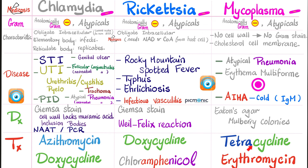How do tetracyclines work? They are protein synthesis inhibitors — they inhibit the 30S ribosomal subunit of bacteria. Erythromycin is a macrolide and another protein synthesis inhibitor, but it inhibits the 50S ribosomal subunit instead. What diseases does mycoplasma cause? Mycoplasma pneumonia — atypical because it's not caused by Streptococcus pneumoniae — erythema multiforme with a target-like rash, and cold agglutinin IgM autoimmune hemolytic anemia. Remember: cold is IgM, warm is IgG.